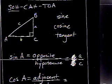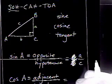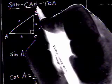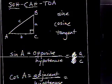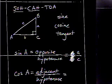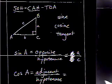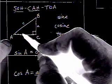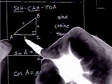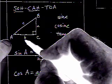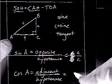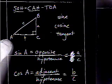What if we were dealing with cosine? Cosine is adjacent over hypotenuse. Adjacent is the one next to. So, the side next to angle A is B. And, of course, the hypotenuse is C. So, this would be B over C.